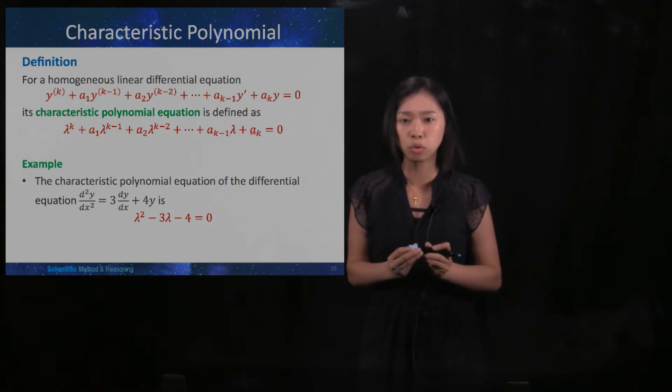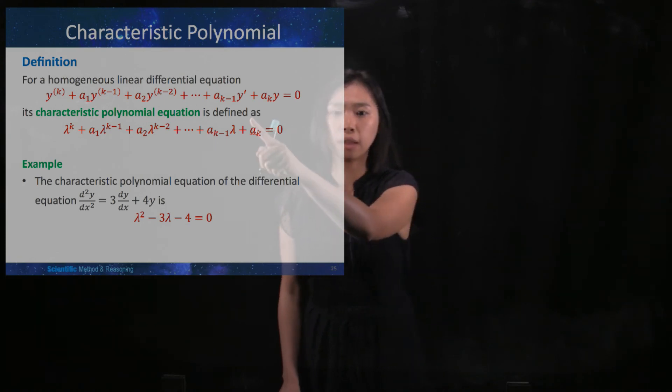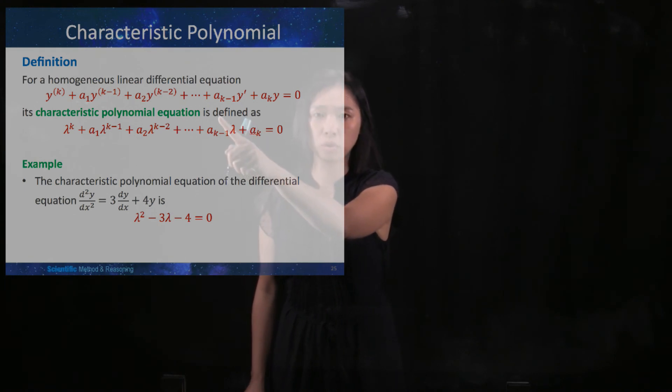So what we're trying to do is, we change here, you got a y, and then you change it to one. And then y, when you differentiate it one time, you change it to lambda. When y differentiated two times, you change it to lambda squared.